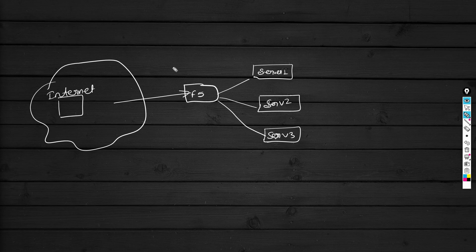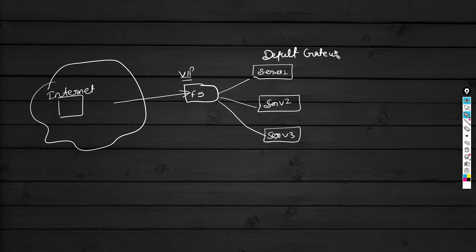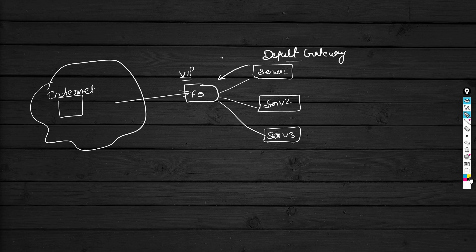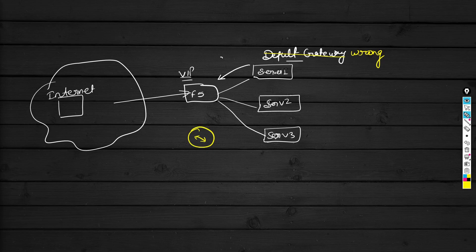This is a normal scenario where you configure a default gateway on all the backend servers. In the lab, the default gateway on these servers was pointing towards the F5 self IP. However, sometimes the default gateway is not configured or it is pointing to some other router rather than the F5.